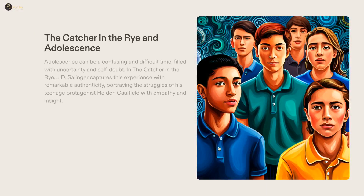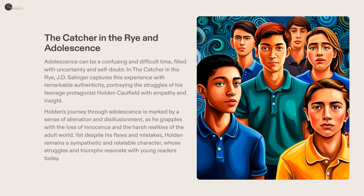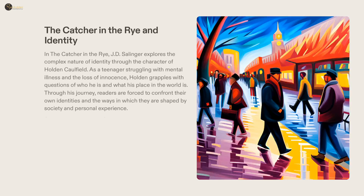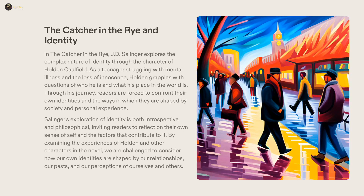The Catcher in the Rye by J.D. Salinger is an iconic work of literature that provides insight into the struggles of adolescence. Holden Caulfield's honest and thoughtful journey reflects the uncertainty and self-doubt many young people feel during this formative stage. His experiences, although sometimes misguided, illustrate how his struggles and successes remain sympathetic and relatable. Readers can explore the questions of identity by looking at how Holden's story relates to their own, drawing their own conclusions on how society and personal experience affect the formation of their selves.